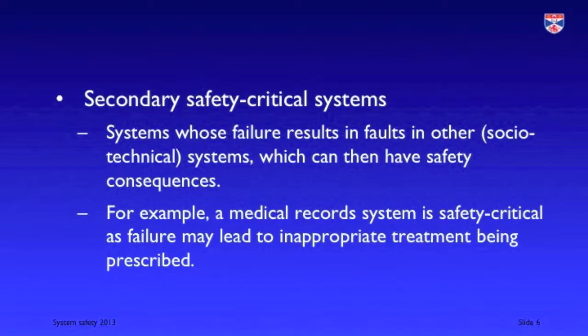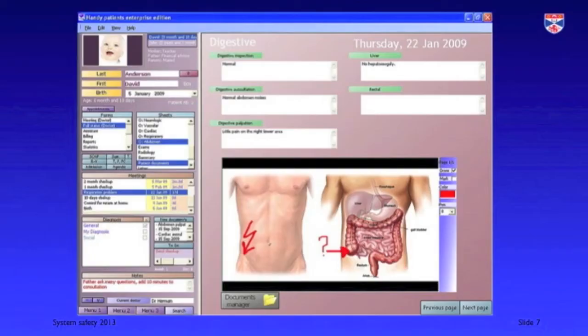The other class are secondary safety critical systems, where failure does not result directly in injury or death, but consequent injury can occur. One example is a medical record system — if a medical record is corrupted or incorrect, clinicians can make the wrong decisions about treatment and injure the patient. Another example is a CAD system used for aircraft or car design, where errors could result in parts of incorrect specification, and failure of those parts could cause injury or death.